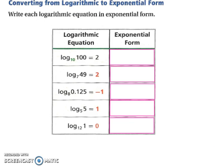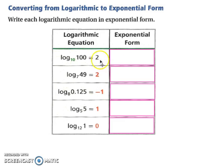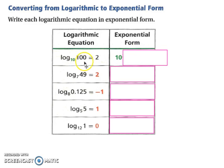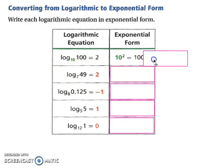What if we go the other way? Let's try converting from logarithmic to exponential form. We have log base 10 of 100 equals 2. The base of your log is still going to be the base of your exponent, and then you switch whatever you have the log of with whatever it equals. So your 100 and your 2 are going to switch places, giving you 10 squared equals 100.